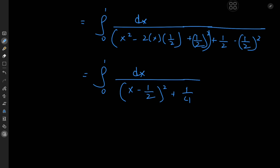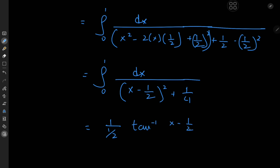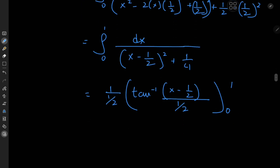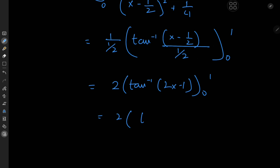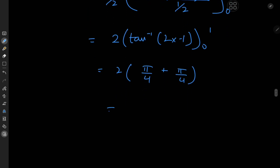This is a very simple inverse tangent structure. On integration, since 1 quarter is 1 half squared, I have the reciprocal of 1 half times the inverse tangent of x minus 1 half divided by 1 half, with limits 0 and 1. So we have 2 times the inverse tangent of 2x minus 1 evaluated from 0 to 1. In the limit as x approaches 1, we have 2x minus 1 approaching 1, and inverse tangent of 1 is pi by 4. For the 0 limit, we have inverse tangent of negative 1, which is negative pi by 4. So we have 2 times pi by 2, which of course equals pi.